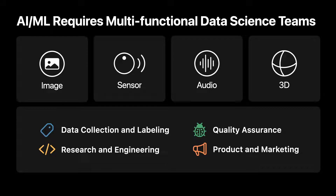AI systems are becoming significantly more capable and are being applied to everything from automated image captioning to 3D scene recognition. These advances are primarily due to large deep learning models trained on massive datasets.